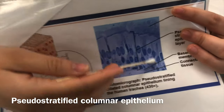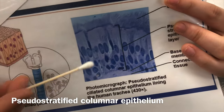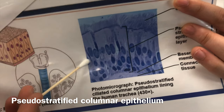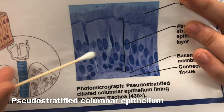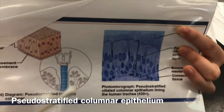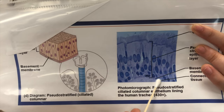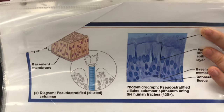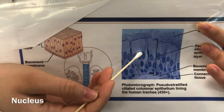Next is pseudostratified columnar epithelium — it's a confusing name. It means you only have one layer of cells, but because of the organization of the nuclei it looks like multiple layers — fake multiple layers, which is what 'pseudo stratified' means. Each cell is attached to the basement membrane right down here. The nucleus is this dark spot right here.